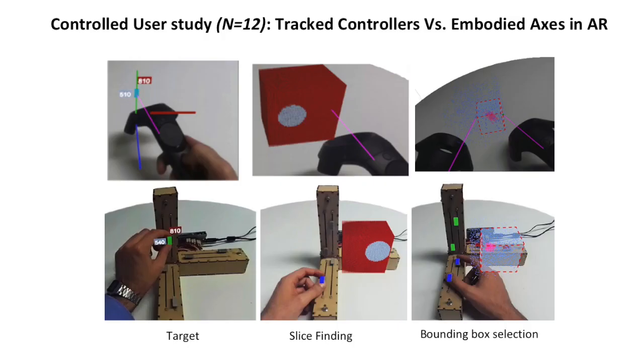To assess the performance that users can achieve with the Embodied Axis, we conducted a controlled user study. We compared the Embodied Axis to state-of-the-art 6DOF tracked controllers in an augmented reality environment. In this study, we tested three tasks: target selection, volume slicing and 3D bounding box selection. These tasks were informed by the formative user study with domain experts.